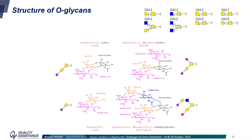There are also O-glycans that are linked to serine or threonine residues. In that case there is no consensus sequence, which means that virtually all serine or threonine residues could be partially glycosylated. The different core structures are presented at the top of the slide, and these structures can be modified, sometimes with sialic acids. A few examples are provided here.